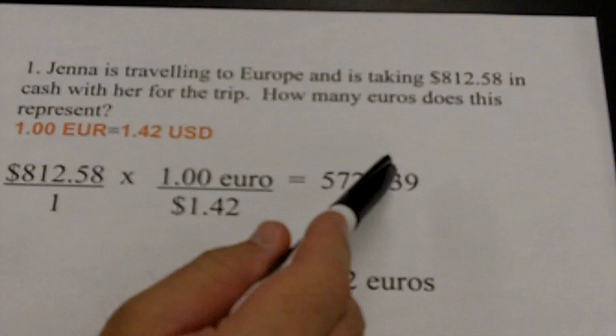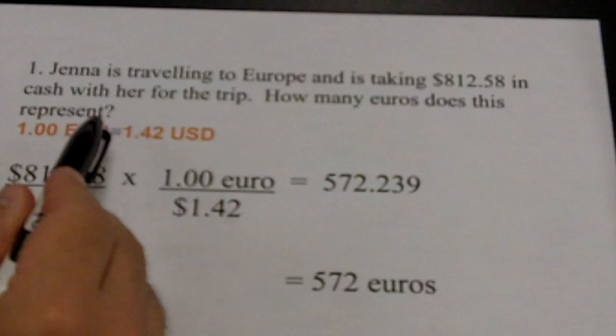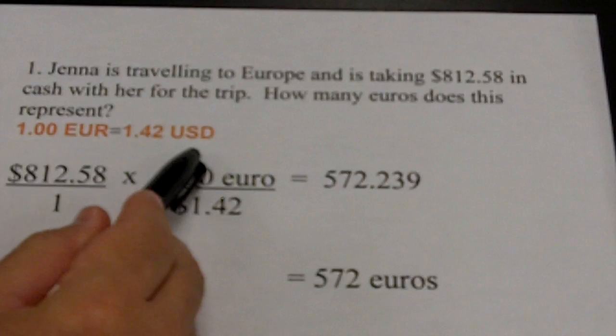She goes to the currency booth and sees that 1.00 euro is equal to $1.42 US dollars. That's the current exchange rate — it may change tomorrow, but for right now, 1.00 euro is equal to $1.42 US dollars.